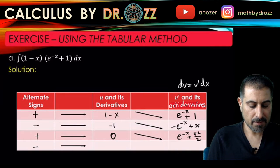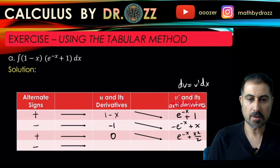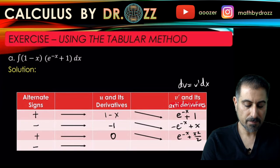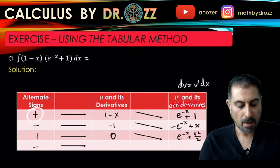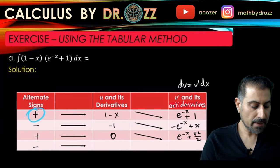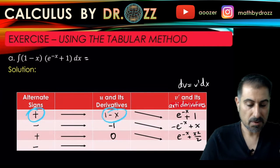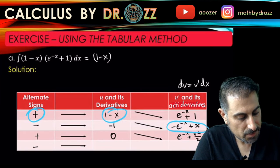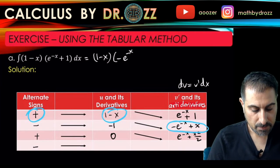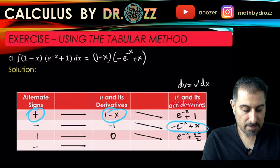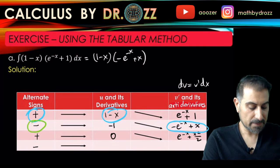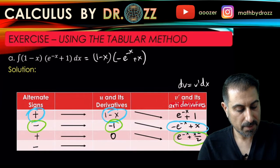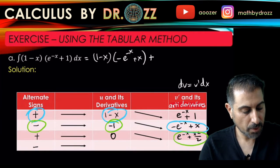Since we stop when the derivative of u equals 0, let's start writing this out. I have plus 1 minus x times this expression here, so plus 1 minus x times minus e to the minus x plus x. We have to follow this in order, and then minus times minus 1 times this, so that becomes plus e to the minus x plus x squared over 2.